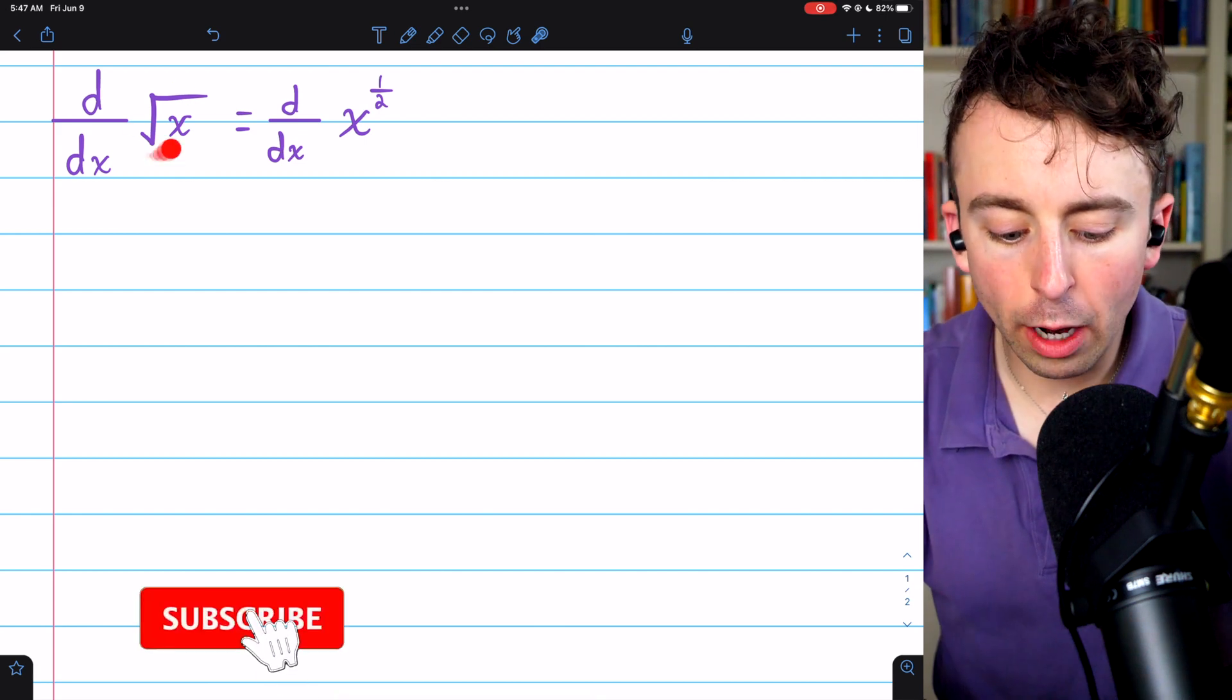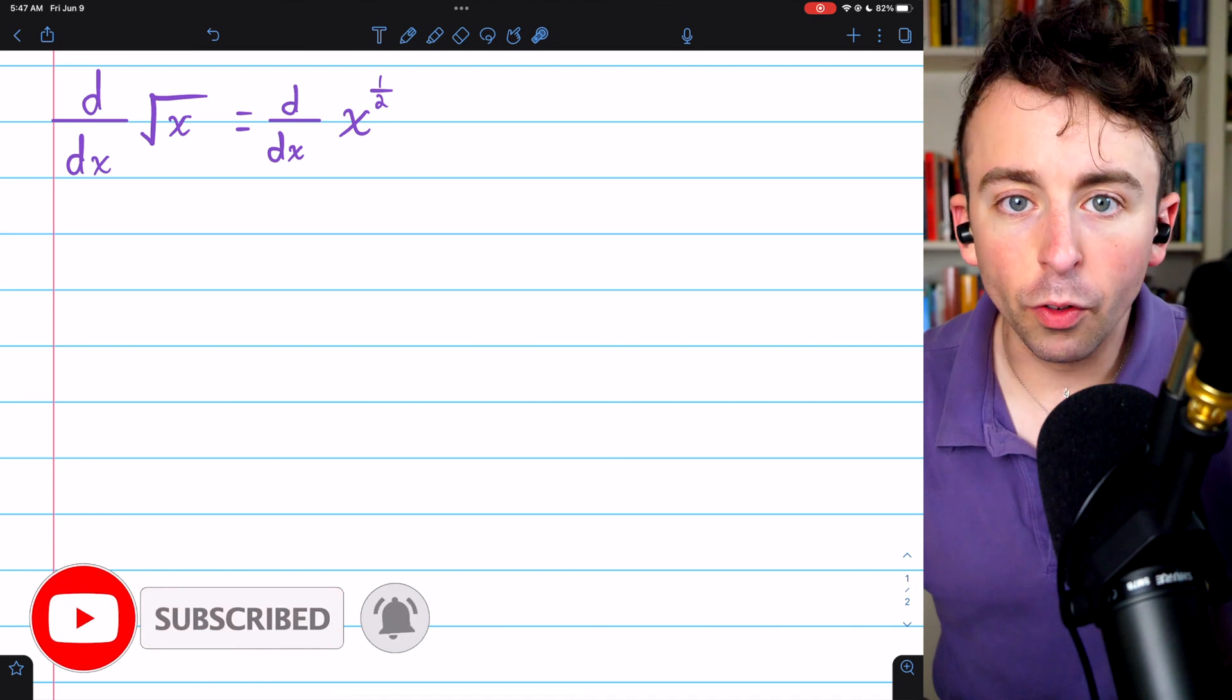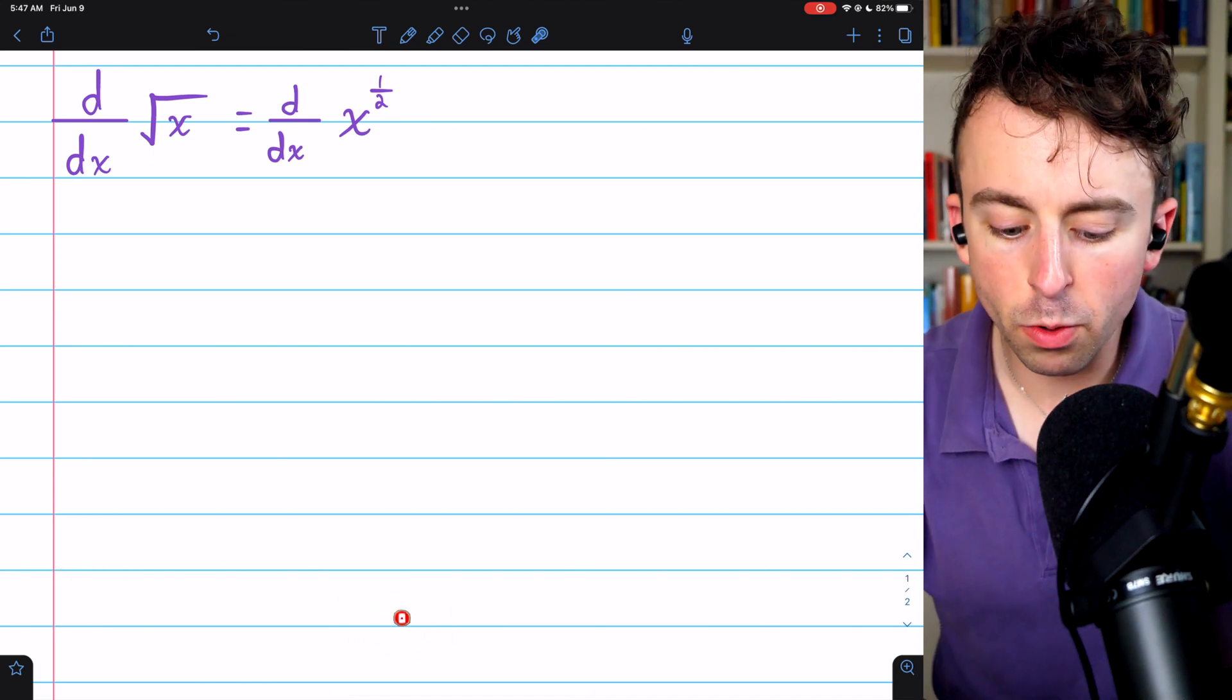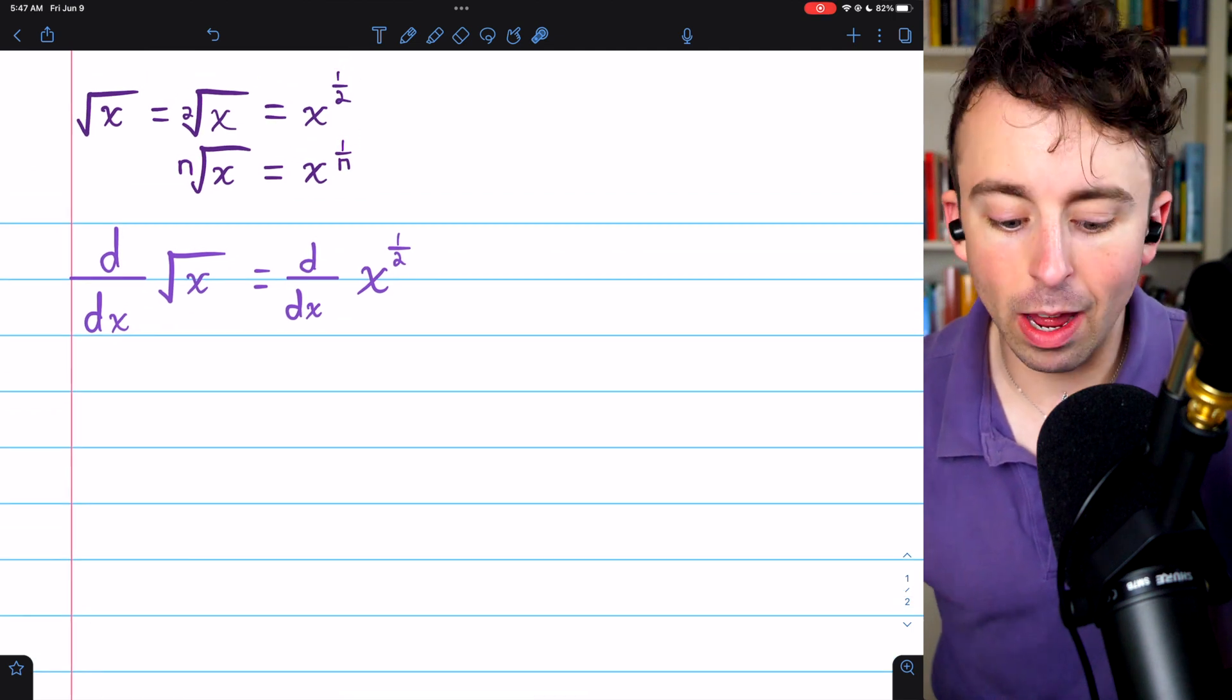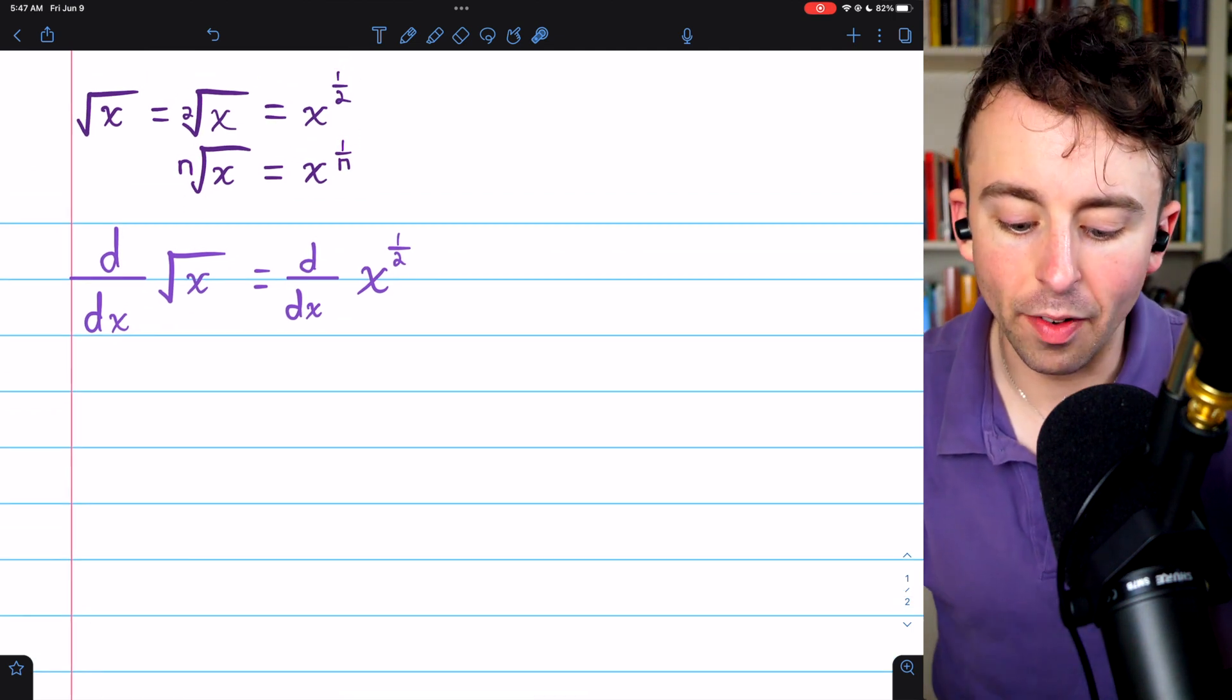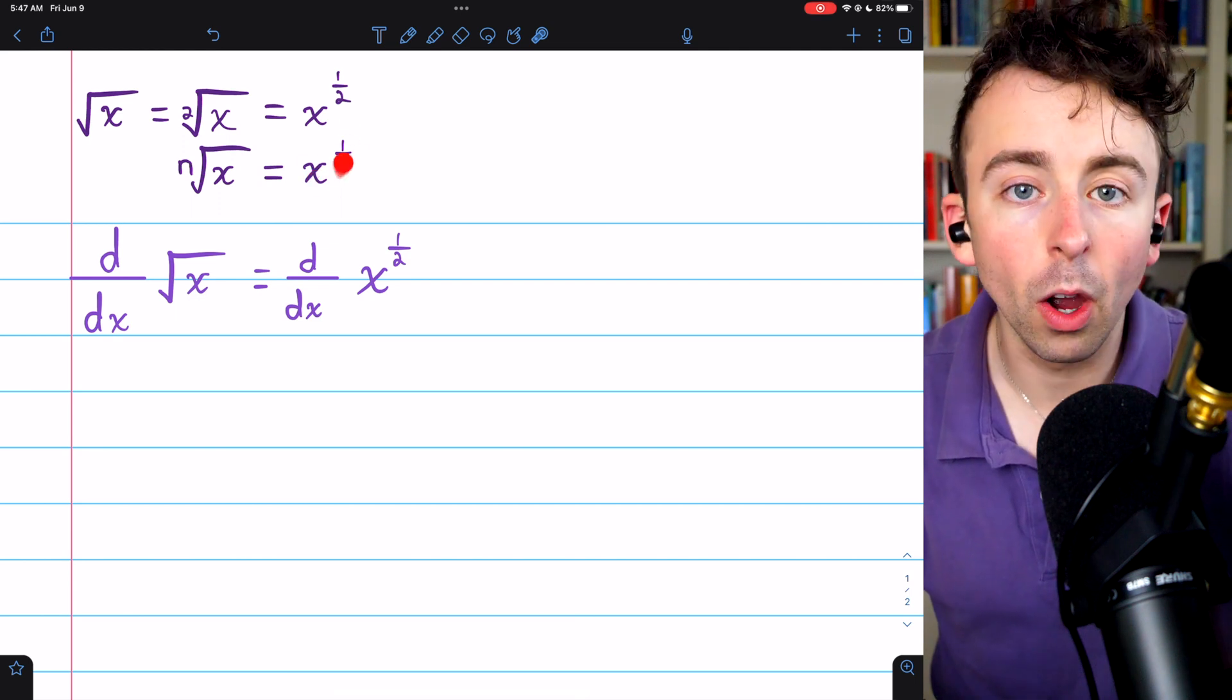To take the derivative of the square root of x, we simply need to use the power rule. Of course, we need to know that the square root of x is the same as x to the power of one-half, and in general, the nth root of x is equal to x to the power of 1 over n.